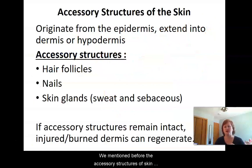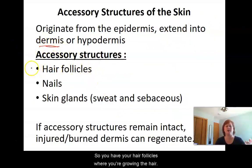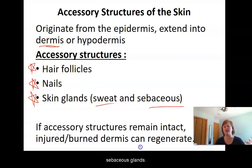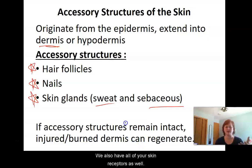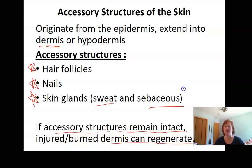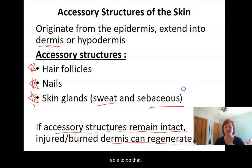The accessory structures of skin originate typically in the dermis or the hypodermis. These include your hair follicles, nails, and the different glands like sweat glands and sebaceous glands. We also have all of your skin receptors as well. If these accessory structures can be kept intact because of an injury or a burn, then typically you can regenerate that dermis. If all of those accessory structures are lost, however, then you're going to not be able to do that.